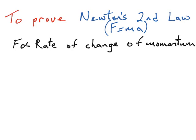To get the change in momentum, we need to know what the starting and the final momentum are for the particular object that we're looking at. Momentum is the mass of the object multiplied by the velocity of the object as it travels. So the final momentum would be its mass multiplied by its final velocity v, minus the starting momentum, which was the mass multiplied by the initial velocity u. To get the rate of change in that, we have to divide the right-hand side by time.